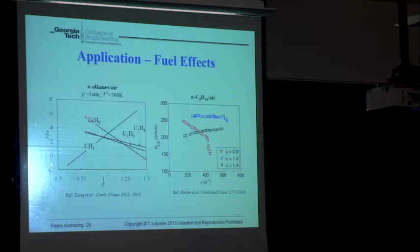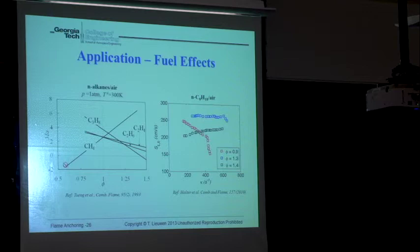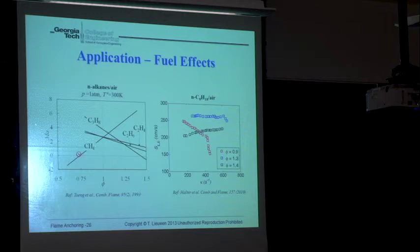For propane, when lean the Markstein number is positive; past an equivalence ratio of about 1.4 it flips negative. Ethane and ethylene, also heavier than air, show similar trends. Methane shows the opposite sign behavior — the crossover happens around φ=0.75. We can predict the sign qualitatively from phenomenological analysis but need detailed calculation or measurement to find the exact crossover point. The key point is that these dimensionless sensitivities are real and can substantially change flame speeds.